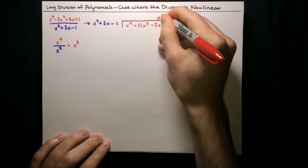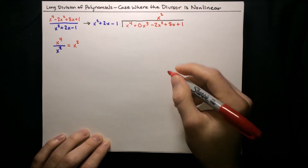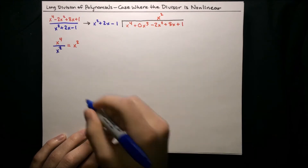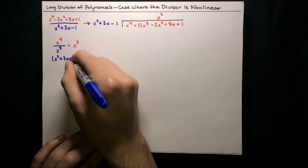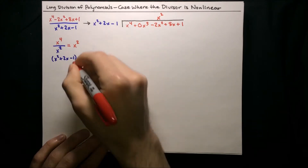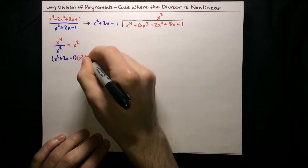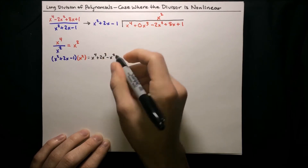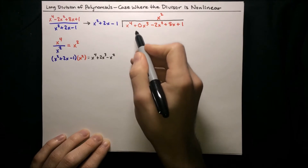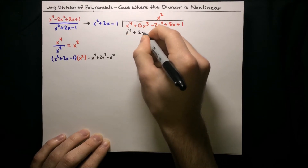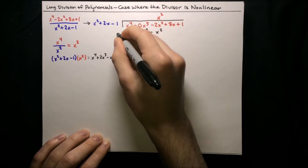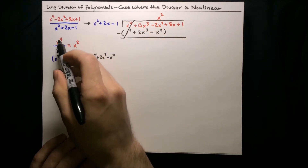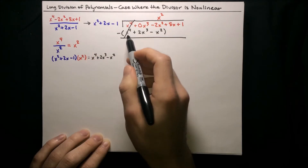We'll put our x squared up on top in its column. Now we have to multiply the divisor by x squared to see what we should write underneath. So x squared plus 2x minus 1 times x squared yields x to the fourth plus 2x to the third minus x squared, and that all goes underneath our dividend. We subtract, and our x to the fourth terms cancel — that's the whole reason we chose this x squared, so the leading terms would cancel.